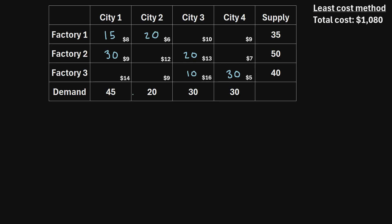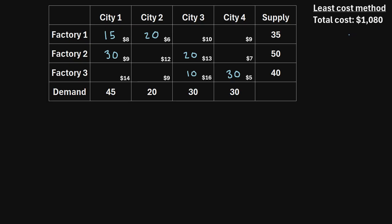I've written this solution within each of the cells. Using that method, for example, we ship 15 goods from factory one to city one, 20 goods from factory one to city two, and so on. Under this method, the total shipping cost is $1,080. This is an initial solution, but to determine if this is the optimal solution — the minimum shipping cost — we can use the stepping stone method.